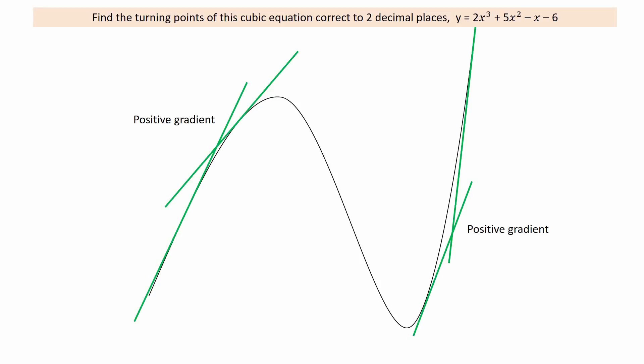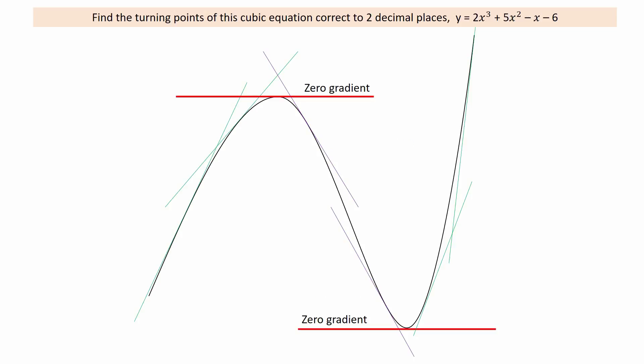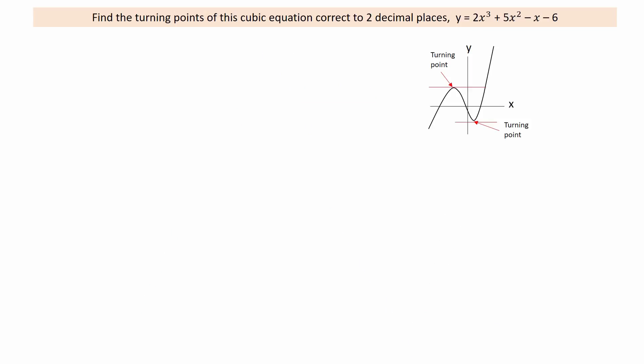The gradient at any point on a curve is found by finding the gradient of the tangent at that point. These tangents have a positive gradient. These tangents have a negative gradient. And between the two are horizontal tangents which have a gradient equal to zero. And it is the point at which the gradient is zero that gives the turning point.